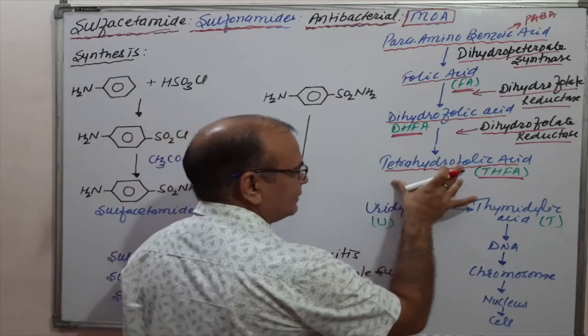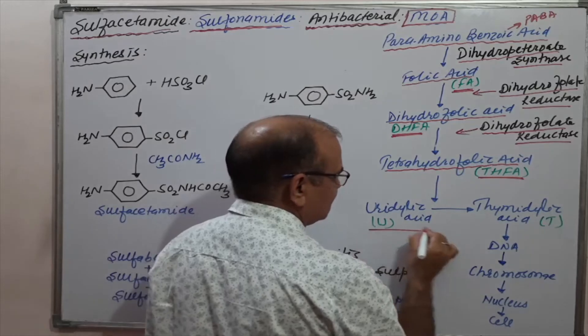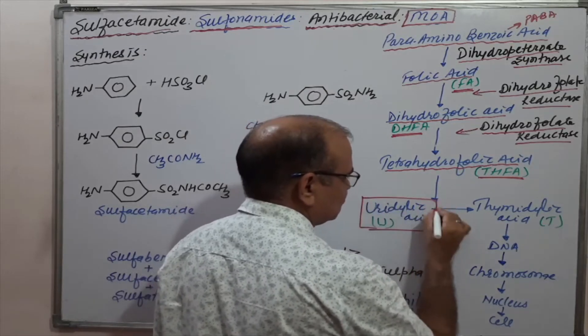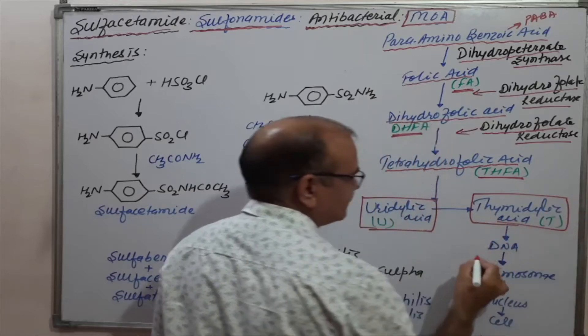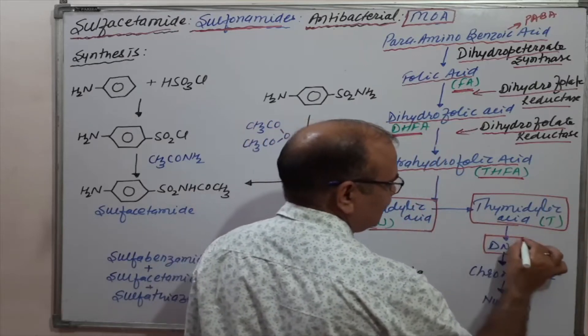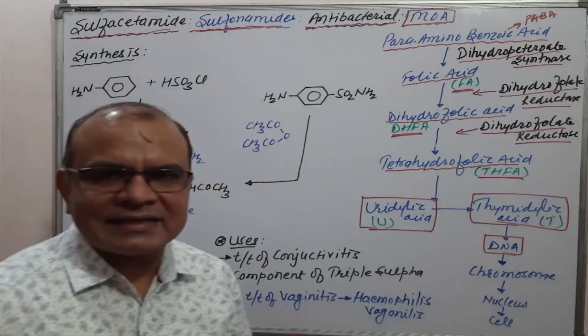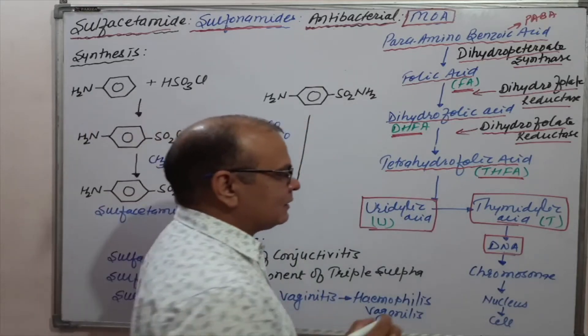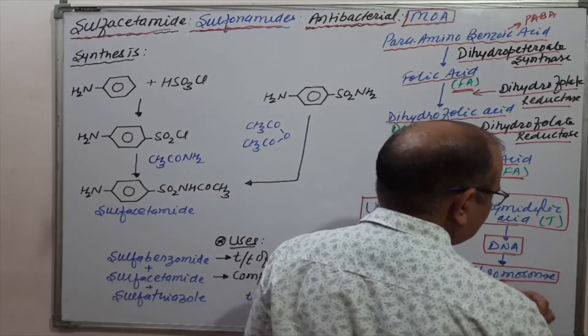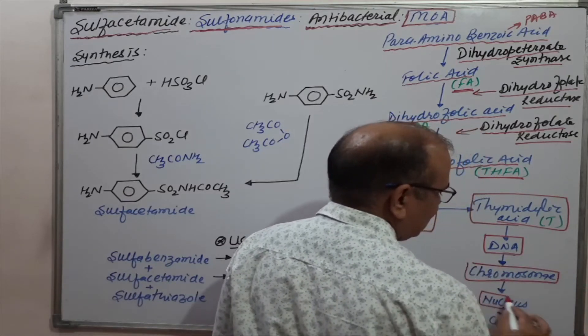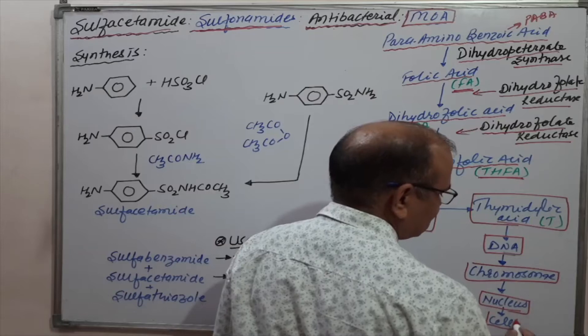Tetrahydrofolic acid is responsible for the conversion of uridylic acid to thymidylic acid. Thymidylic acid is a component of DNA, which is essential for DNA synthesis. DNA component is part of chromosomes, chromosomes are in the nucleus, and nucleus means cell formation.